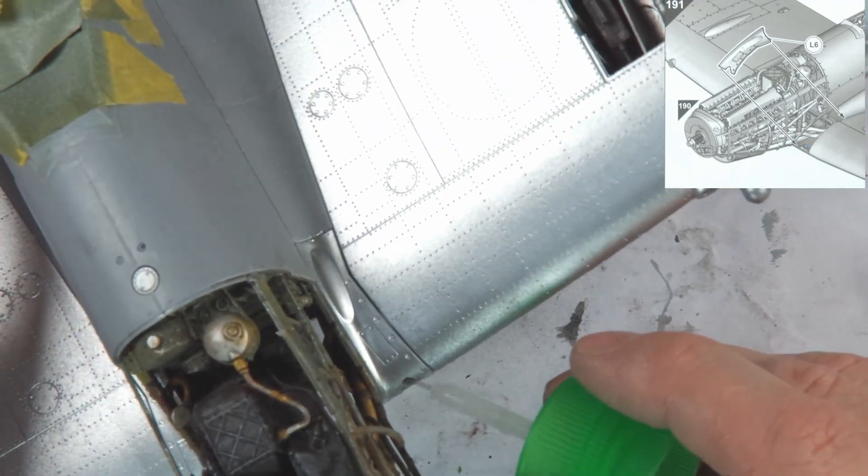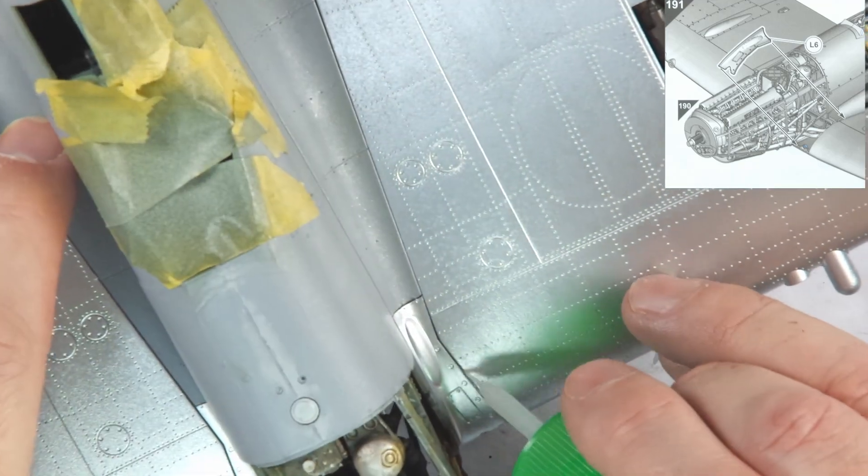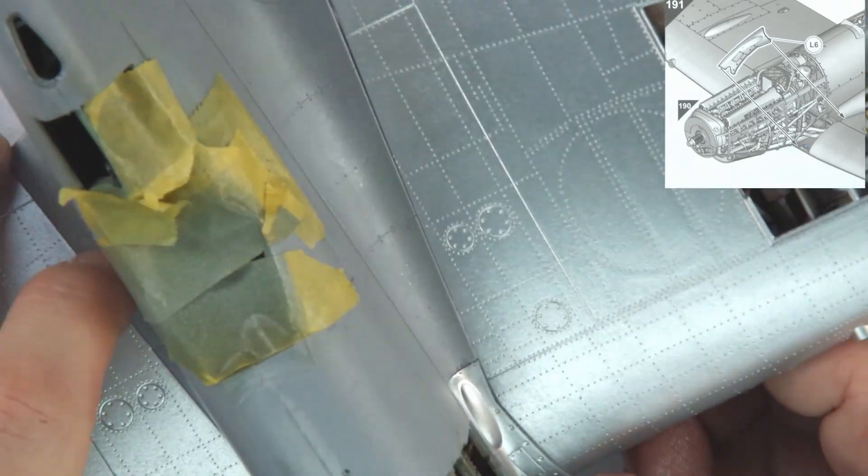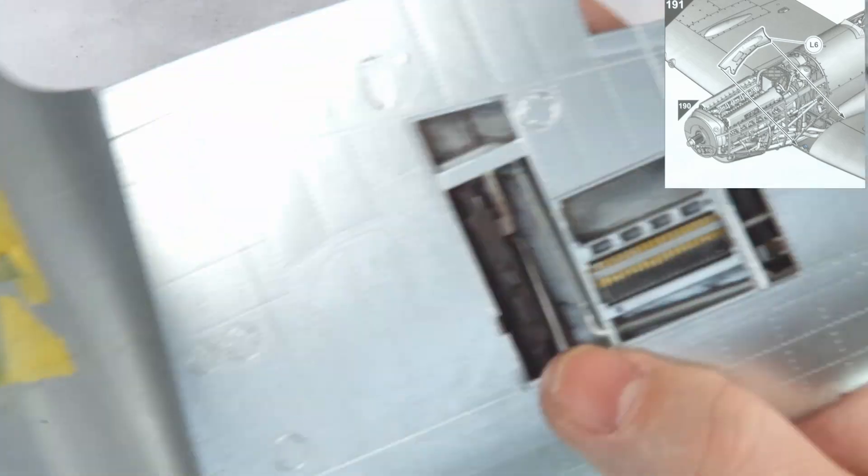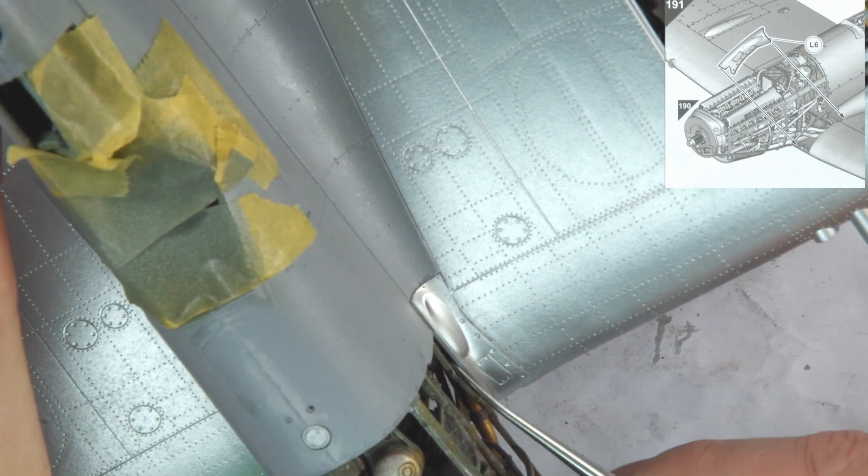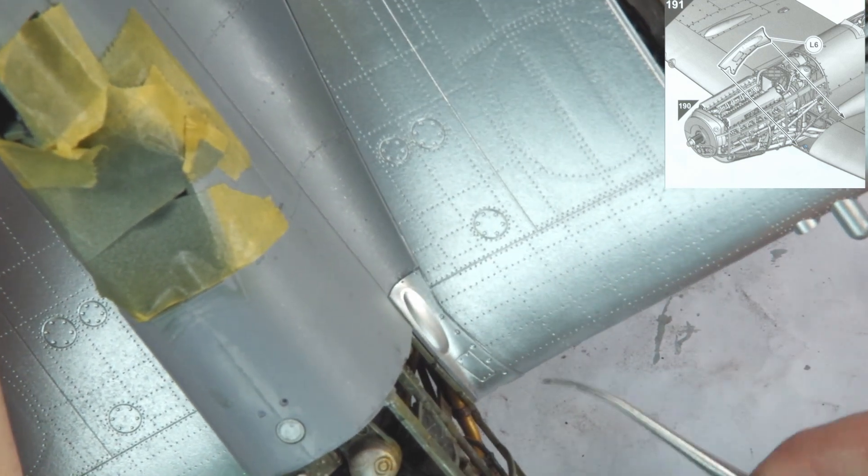Steps 190 and 191 attach the wing root panels, which seated well on the wings but needed a bit of coaxing to achieve a suitable fit elsewhere. Part of the problem here is that they form a union between three separate surfaces that are all constructed at separate times, which isn't ideal. Personally, I'd have preferred these to have been incorporated with the rest of the upper wing.